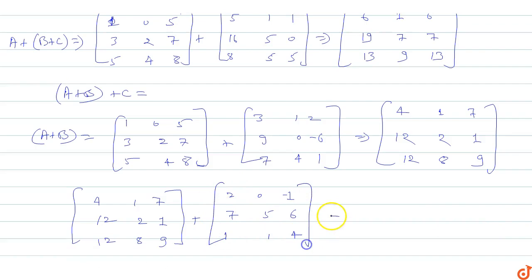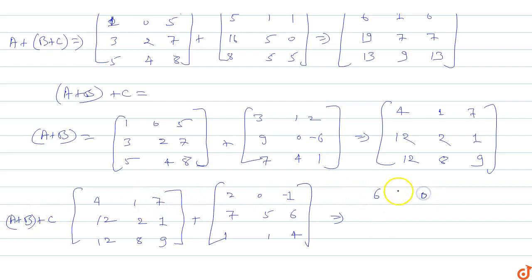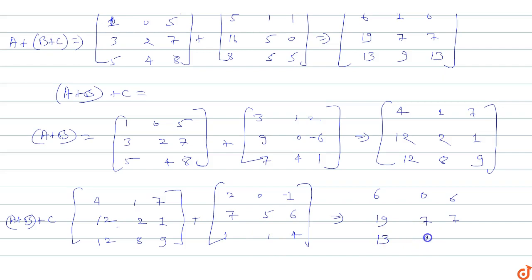(A + B) + C gives: 4+2=6, 1+0=1, 7-1=6, 12+7=19, 2+5=7, 1+6=7, 12+1=13, 8+1=9, 9+4=13. So (A + B) + C matrix is 6 1 6 / 19 7 7 / 13 9 13.